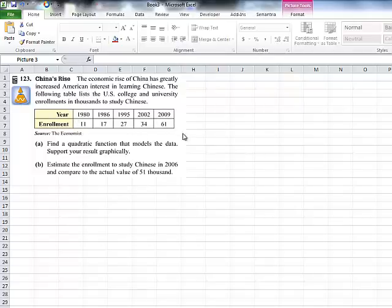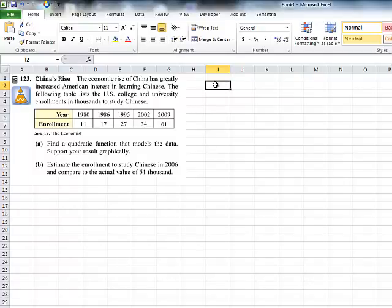So one would assume that these are in thousands. So let's first just graph those data. So I'm just going to make a little table here that has the year, so 1980, and then that had 11,000. And then in 1986, it was 17,000.